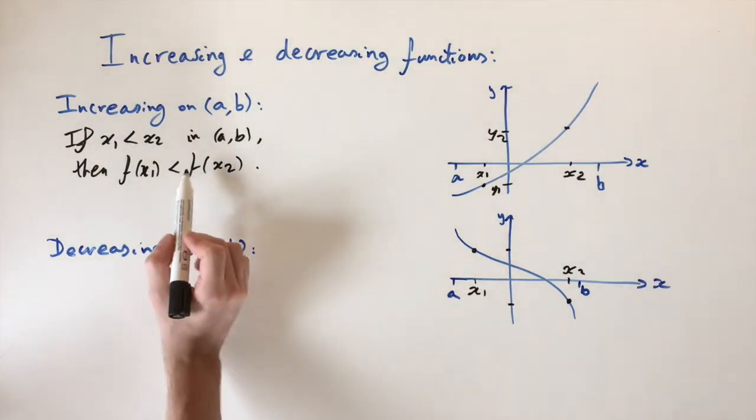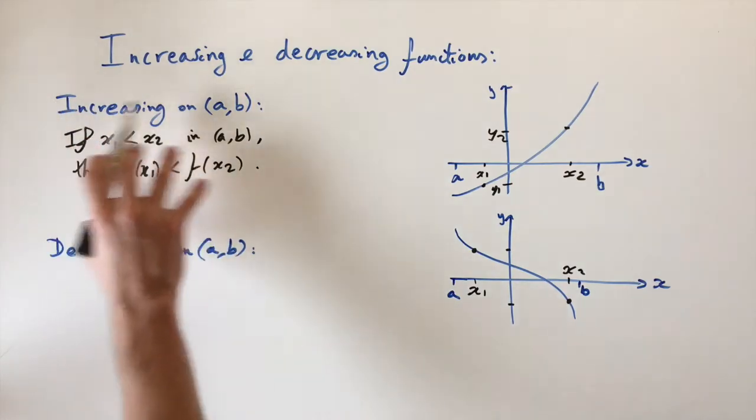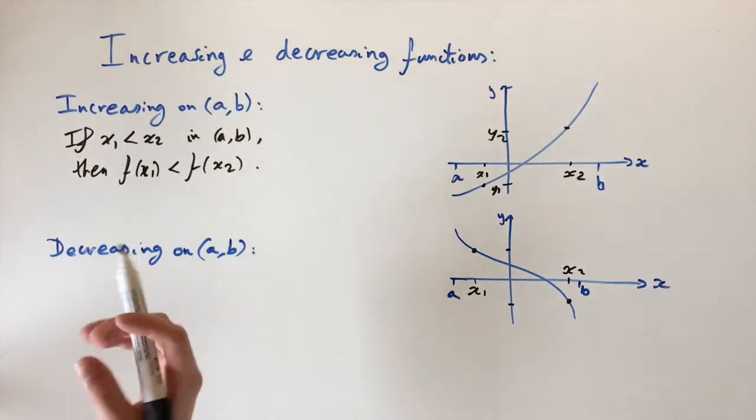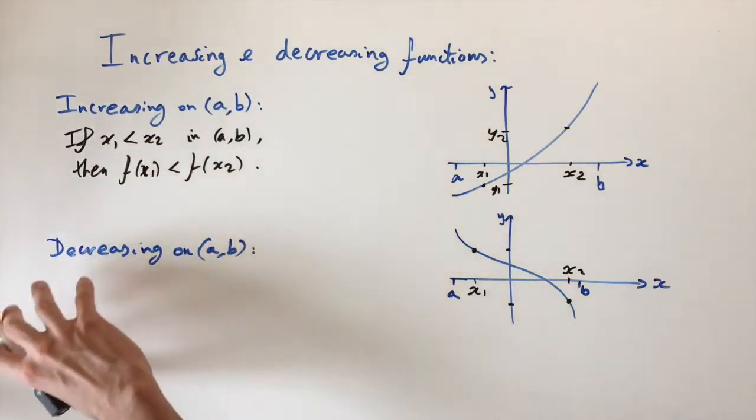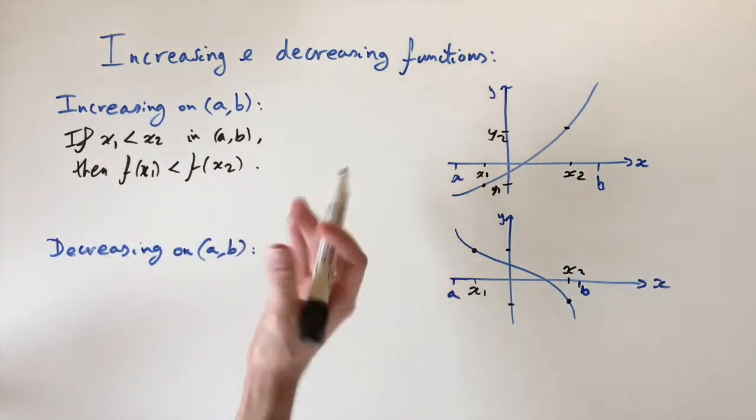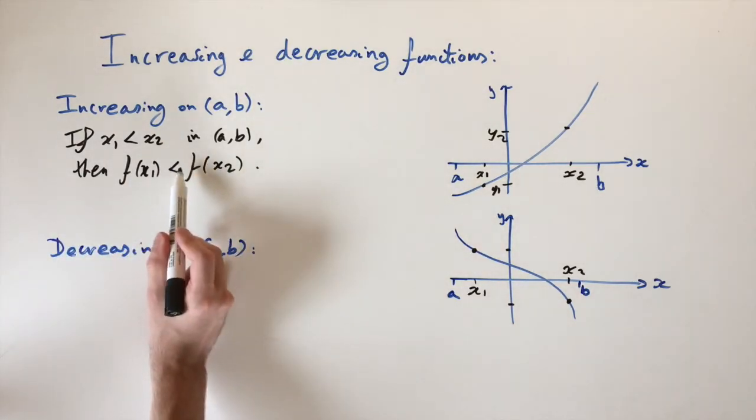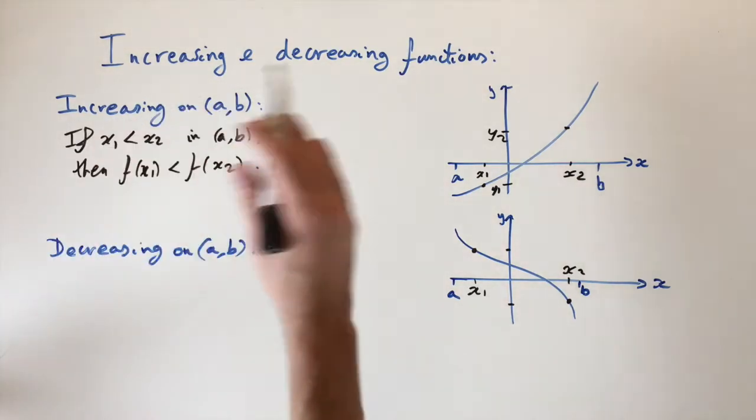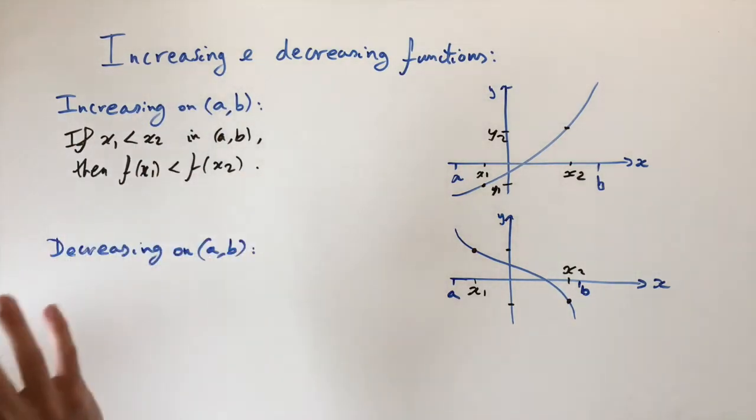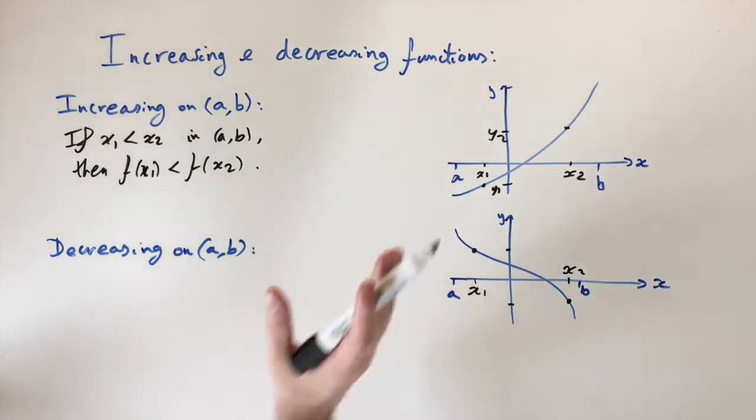So one thing to note here is since we have a strict inequality, sometimes this property is called strictly increasing. This is in contrast to another property where it's non-strictly increasing, where instead of this sign, we have a greater than or equal sign. And then you can kind of have regions where the curve is flat. But for this, we're just looking at strictly increasing functions where it's always going up.